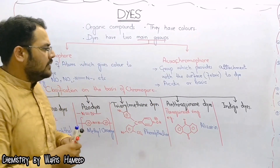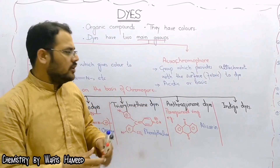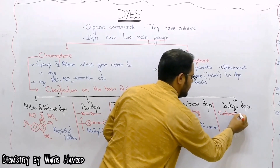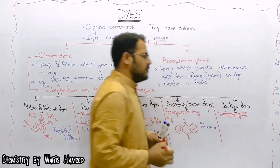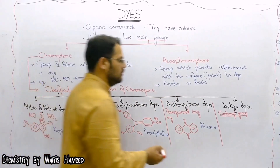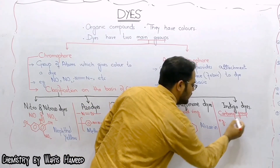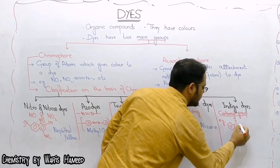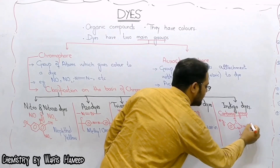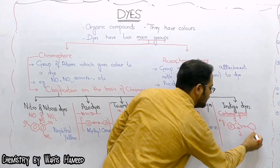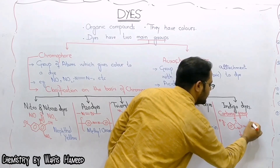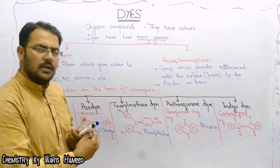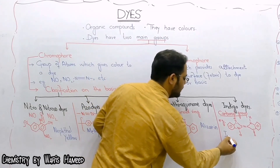The last one is indigo dyes. In the case of indigo dyes, the carbonyl group is actually the chromophore. The carbonyl group is used as a chromophore, and it is also known simply as indigo. The structure includes a benzene ring, carbon double bond oxygen (C=O), nitrogen-hydrogen, carbon double bond carbon, carbon double bond oxygen, nitrogen, hydrogen, and another benzene ring.